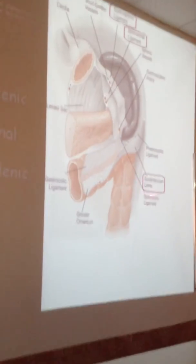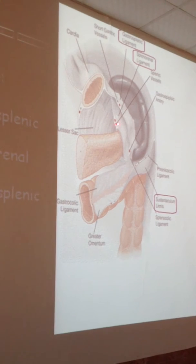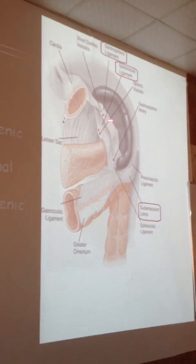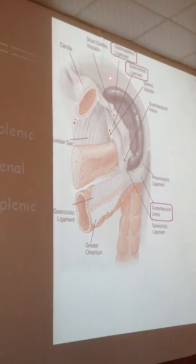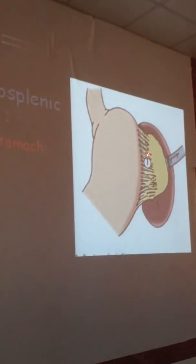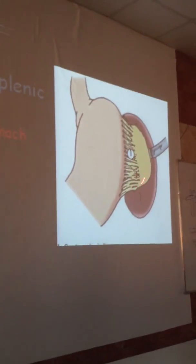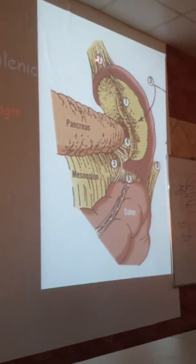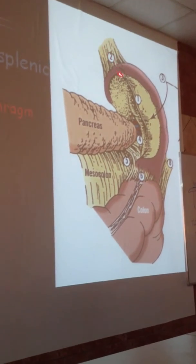The spleen is suspended in its place by three ligaments. The first is the splenorenal ligament. The second is the gastrosplenic ligament, which connects the stomach with the spleen. The third is the phrenicolineal, or phrenic-splenic ligament, which connects the diaphragm with the spleen.